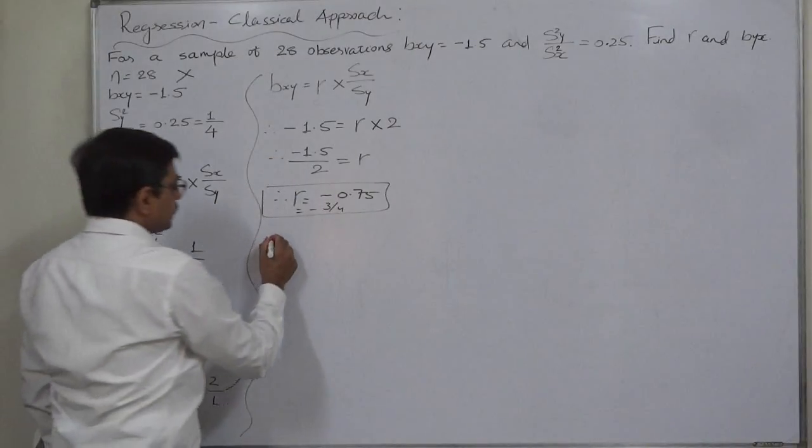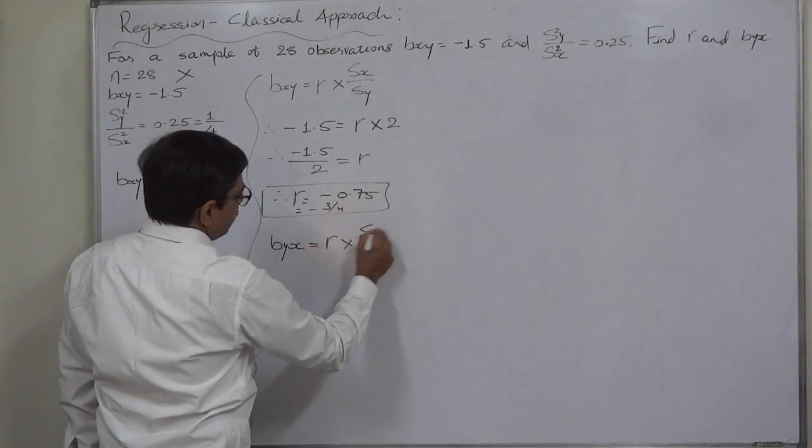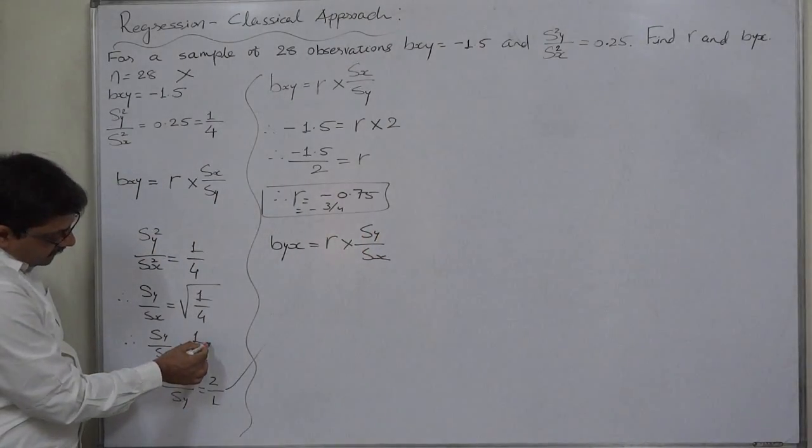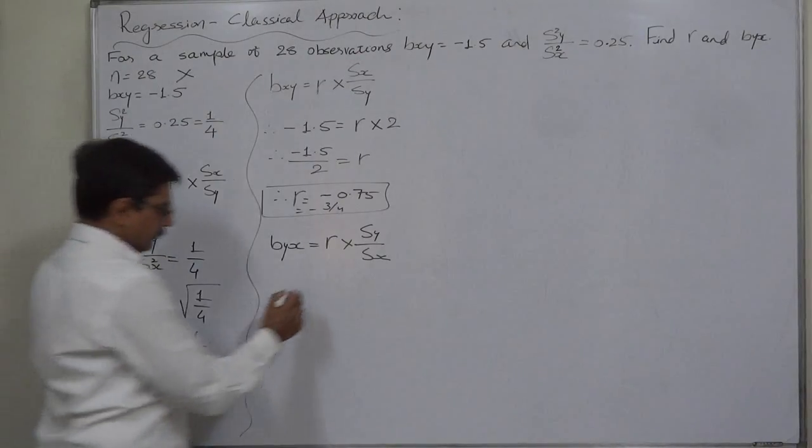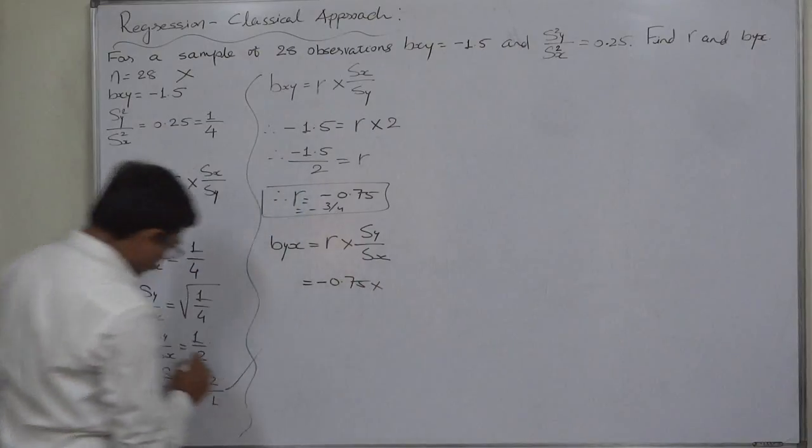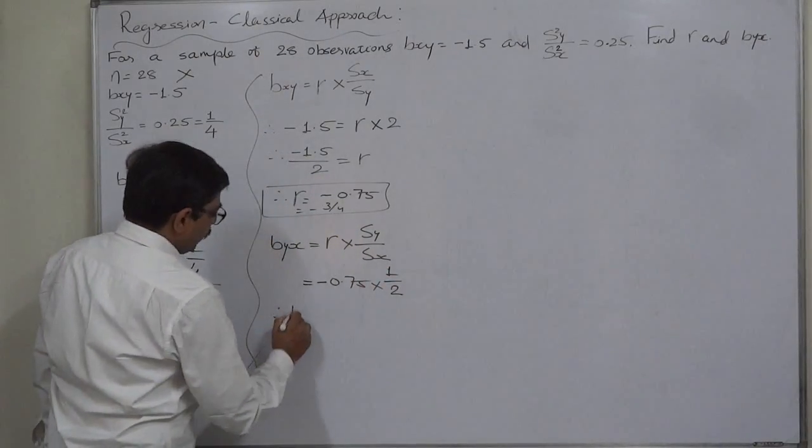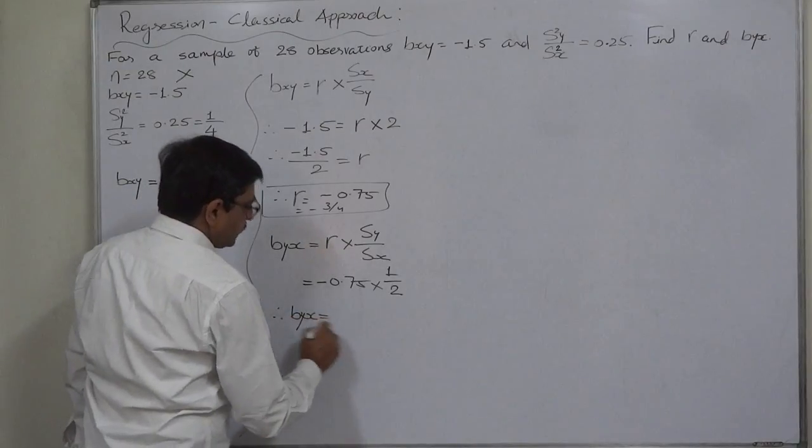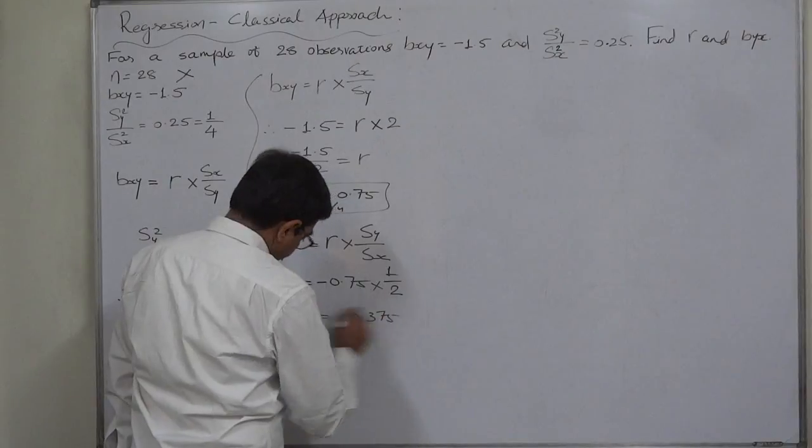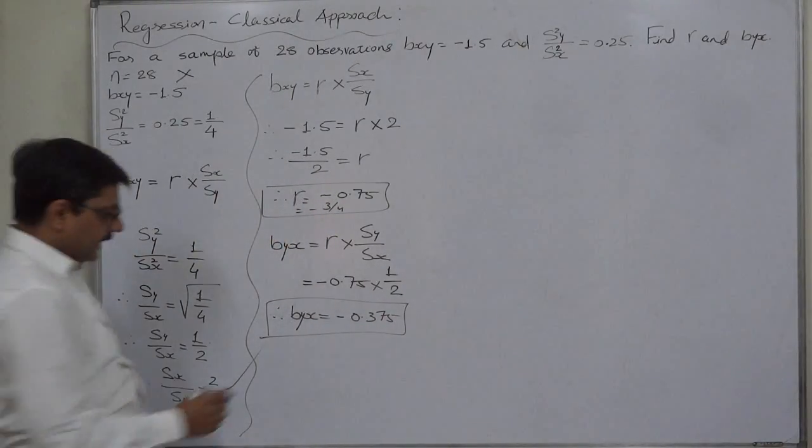Byx equals to coefficient of correlation into Sy upon Sx. We have the value of Sy upon Sx: minus 0.75 into 1 by 2. Therefore, Byx is minus 0.375 or say it is 3 by 8 negative.